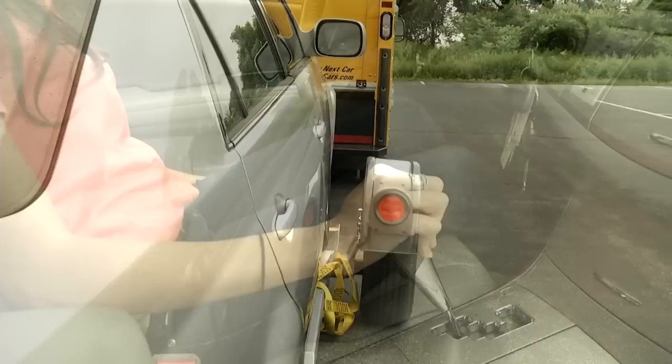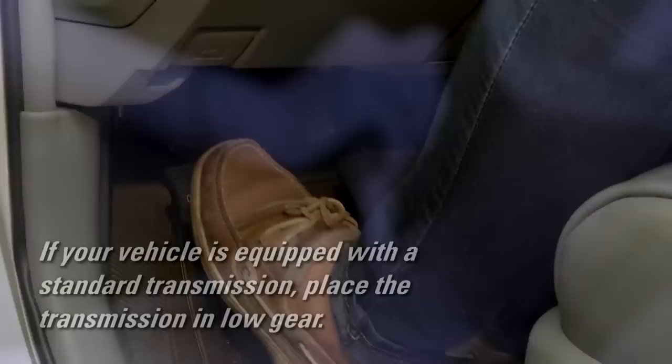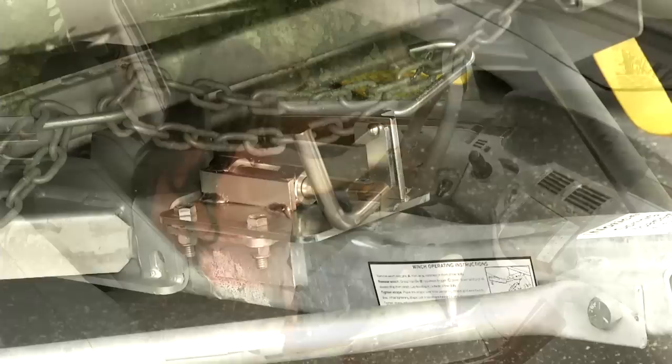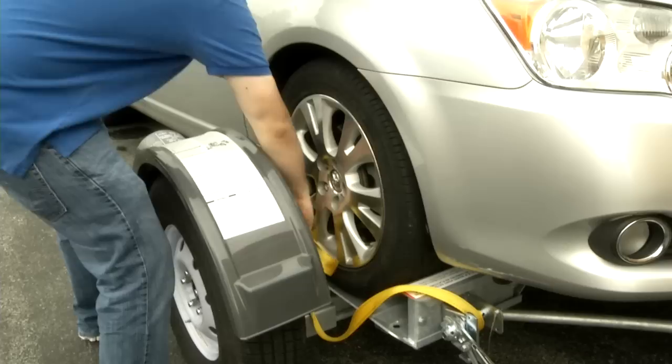Place the towed vehicle's transmission in the park position and engage the parking brake. If your vehicle is equipped with a standard transmission, place the transmission in low gear. Turn off the ignition and remove the keys. Slide the platform locking pin into the locked position.